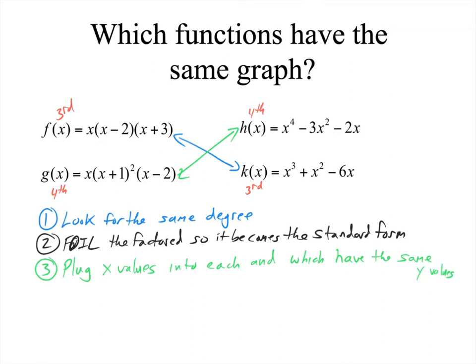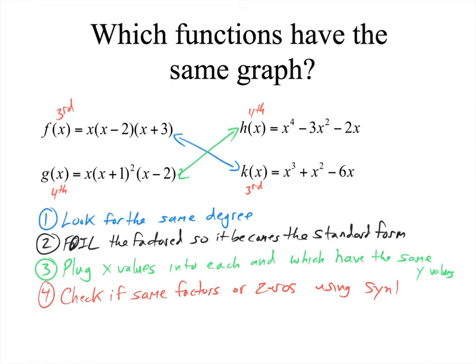The last method is using synthetic division. Can't you check if they have the same factors by synthetic division? You can check if they have the same factors or zeros using synthetic division. You would check these zeros and see which ones produce that factor or zero in the other function, and you can backwards map which one's which. These methods are all longer, but there are options to guarantee you have the right one.